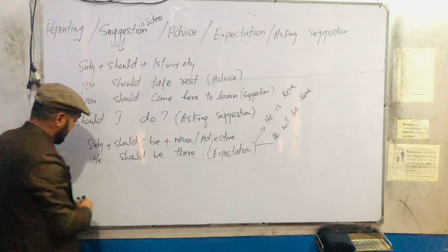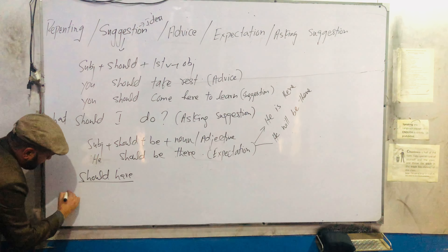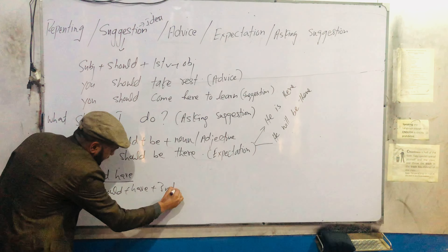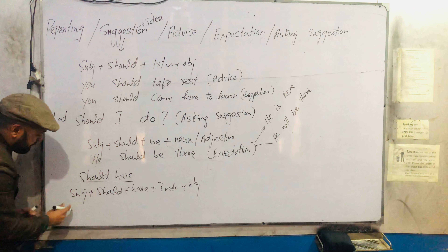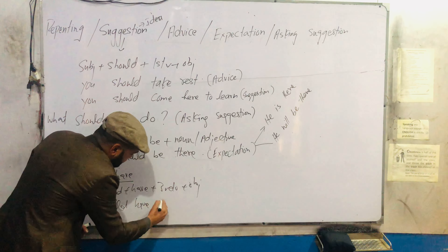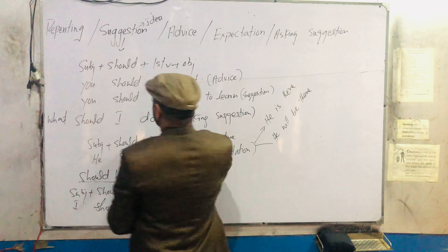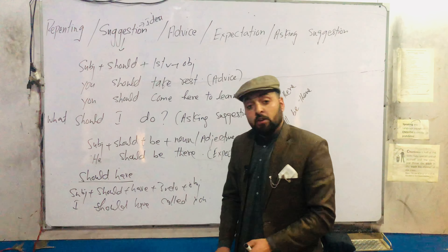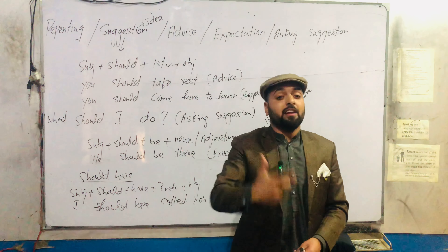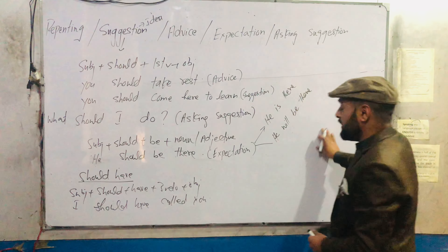Now for repenting, you have to use 'should have'. For repenting, the structure is: Subject + should have + third form of verb + object. For example: 'I should have called you' — mujhe aap ko call karna chahiye tha. This means you didn't call, and now you are repenting about it. So 'should have' is used when you are repenting or feeling regret about something you didn't do.